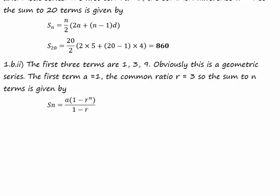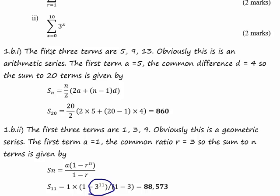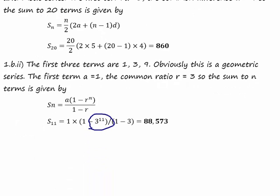Putting the values in, we get the sum to 11 terms. Remember we start at 0 and we go to 10, so that's 11 terms in total. That gives us the answer of 88,573. And that's the end of question 1.